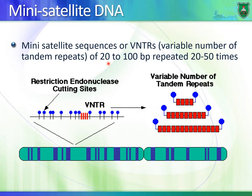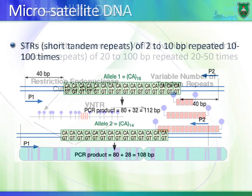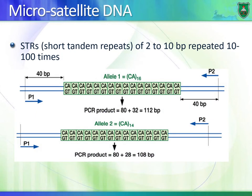Mini-satellites or VNTRs — each repeat contains about 20 to 100 base pairs and can be repeated 20 to 50 times. Micro-satellites are repeated 10 to 100 times and have a size of 2 to 10 base pairs.